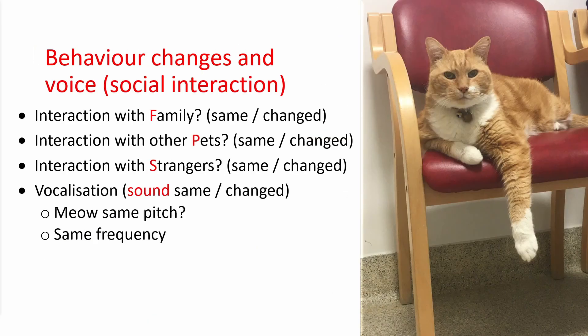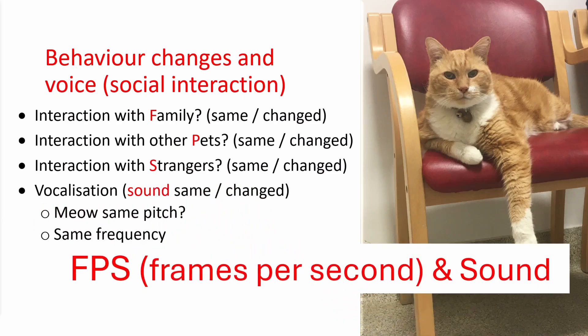Next, ask more specific questions about behaviour changes and social interaction. The mnemonic I use is FPS — Family, Pets, and Strangers — and also Sound. Is their interaction with the family the same? With other pets? With strangers? And do they sound the same? Some diseases, especially neuromuscular diseases, can cause a change in voice — a so-called dysphonia. If you don't ask these questions, you're often not told.